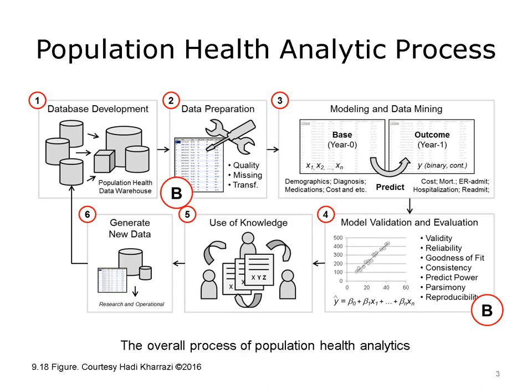This diagram shows the overall steps involved in developing analytics for population health management and risk stratification. As shown in Box 1, the first stage involves the merging of various data sets and developing a centralized or distributed population health data warehouse. The second step, depicted by Box 2, includes various processes to prepare the data for analysis, such as fixing data quality issues, deleting or imputing the missing data, and transforming the data to meet the assumptions of a given analytical approach.